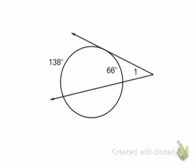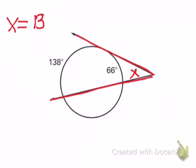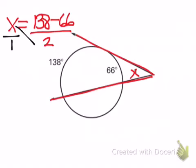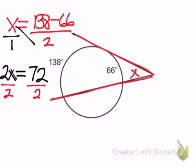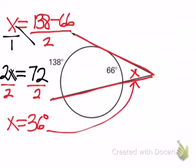Here's our first example. I want to find the measure of angle one, so I put an x there. Angle one is formed by a secant — which goes through the circle — and a tangent, which only touches it at one point. Using my theorem, the angle x equals the difference of the two arcs: the larger one is 138, subtract the smaller one, 66, and take half. Setting up a proportion: 2x equals 138 minus 66, which is 72. Dividing both sides by 2, x equals 36 degrees, which is reasonable.